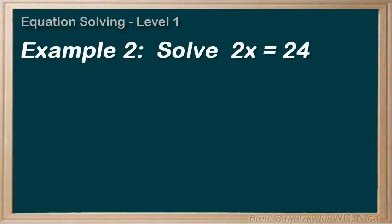Example 2: Solve 2x = 24. Again, our goal is to get the x by itself. Isolate it. To do this, we need to get rid of that 2.